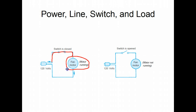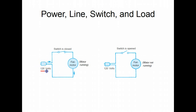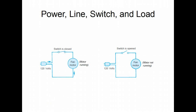Loads tend to be motors — in this example, it's a fan motor. So let's take a look at power, line, switch, and load. In this circuit, we have 120 volt power, we have the line or path for the current to flow, the switch is closed, and we have a load — then we have a complete electrical circuit. Every electrical circuit will have the power, line, switch, and load. There will be some exceptions where a switch is not present, but for HVAC purposes, 99% of the time it's power, line, switch, and load.